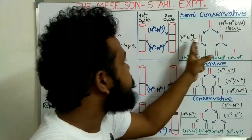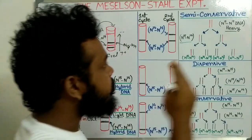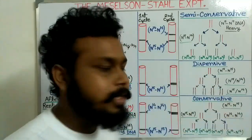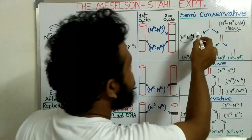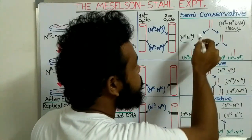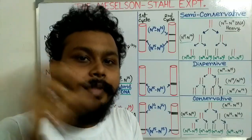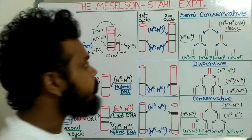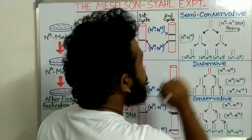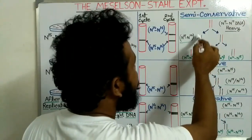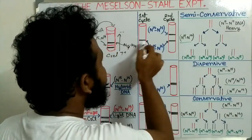The new strand is N14 because the bacteria are now transferred to N14 medium, and replication is checked after the first generation in N14 medium. All nitrogen-containing components of the new DNA take up N14 from this medium, so the new DNA strand will be N14. After the first replication cycle, we get an intermediate band containing one N15 DNA strand and one N14 DNA strand.